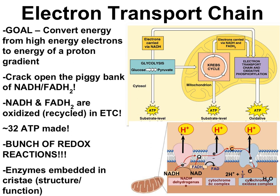The electron transport chain will convert the high-energy electrons from NADH and FADH2 into a proton gradient. In a way, it's like all of the money in the bank that was stored in NADH and FADH2 will now be converted to ATP. Of the 36 ATP made per glucose in aerobic cellular respiration, 32 of them are made right here, in the process of a bunch of redox reactions.